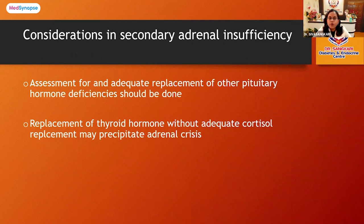In secondary adrenal insufficiency, which is often due to a pituitary tumor, we should also assess for deficiencies in other pituitary hormones, as the pituitary gland produces gonadal hormones, ACTH, TSH, and prolactin. We should screen all anterior pituitary hormones when considering secondary adrenal insufficiency. Importantly, cortisol must always be replaced first before replacing thyroid hormone, in order to prevent an adrenal crisis.